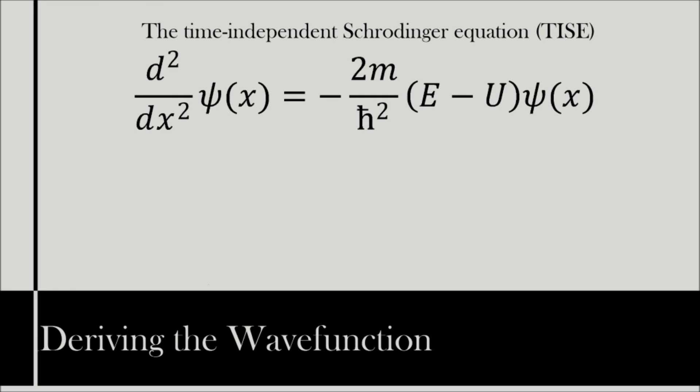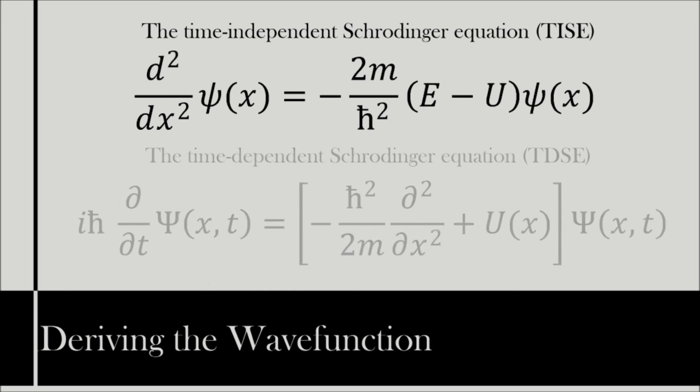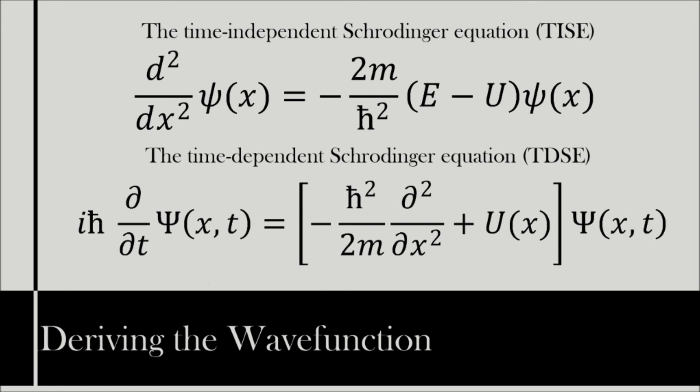iℏ times the partial differential with respect to t of ψ(x,t) equals (minus ℏ² over 2m times second order partial differential with respect to x plus U(x)) times ψ(x,t).